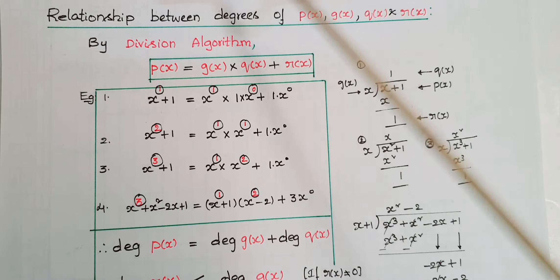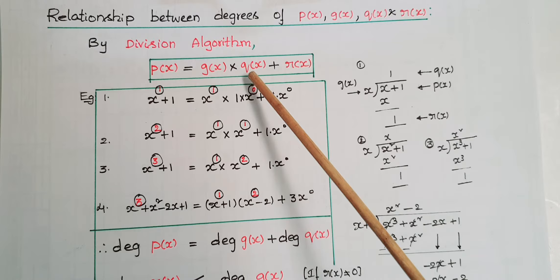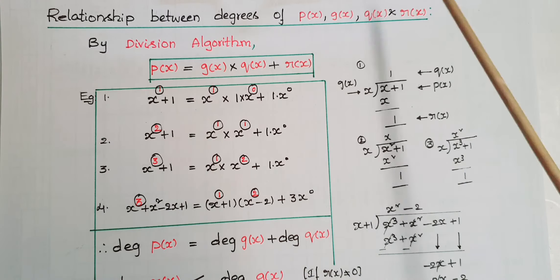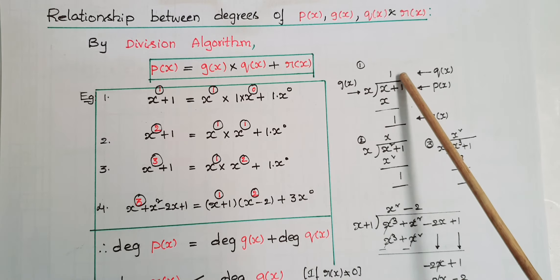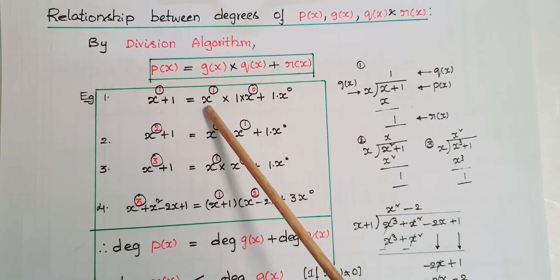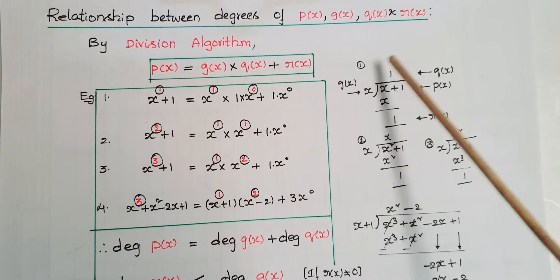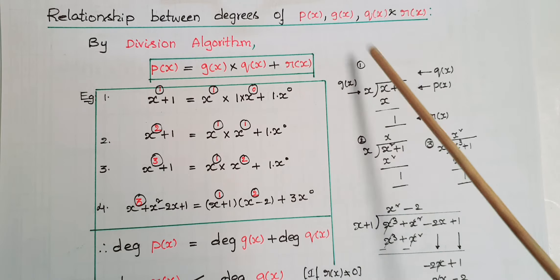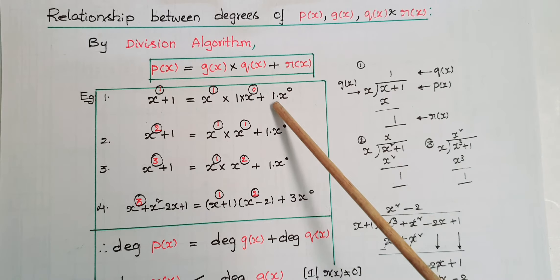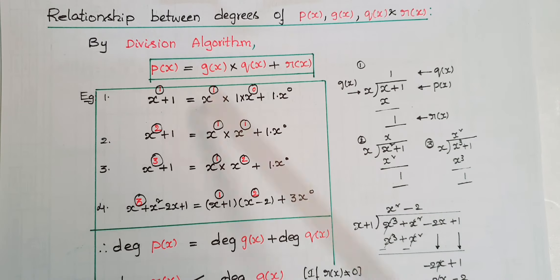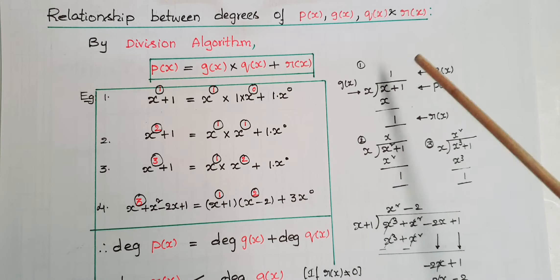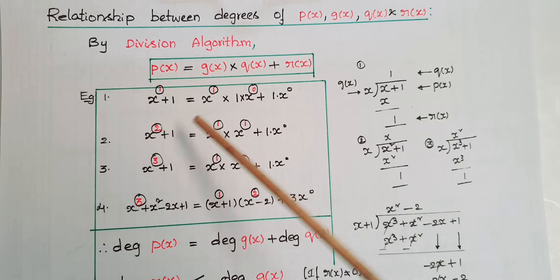Now I am going to tell the relationship between the degrees of p(x), g(x), q(x), and r(x). We know by the division algorithm that p(x) = g(x)·q(x) + r(x). For example, if you divide x + 1 by x, you get quotient 1 and remainder 1. So x + 1 = x·1 + 1·x⁰.